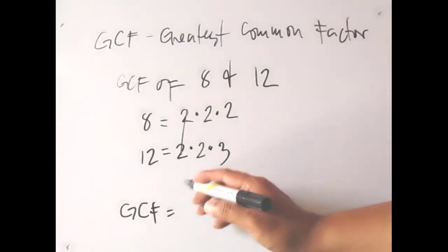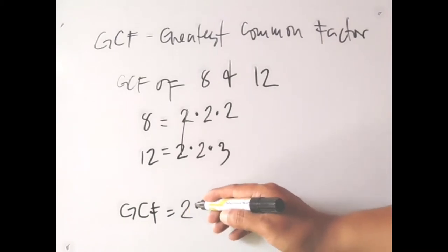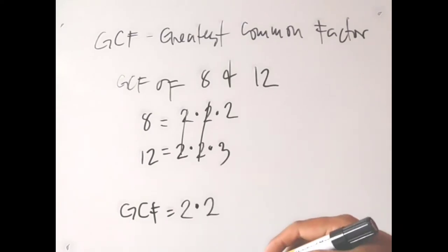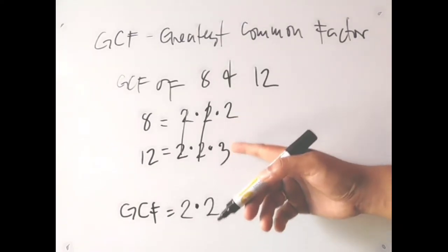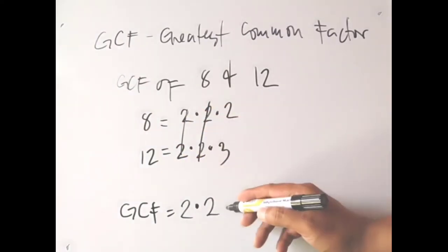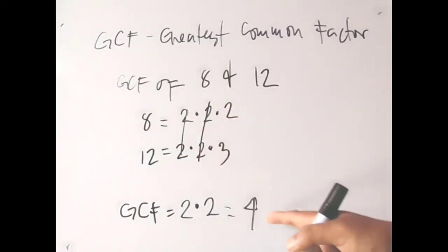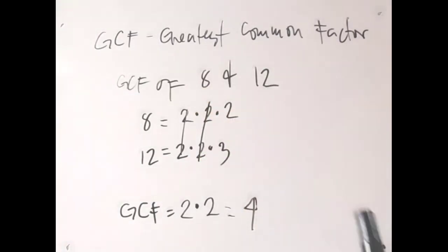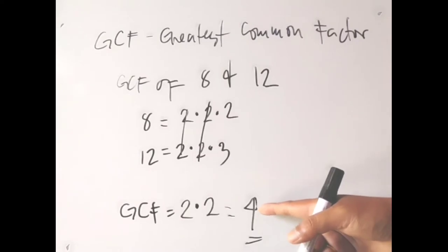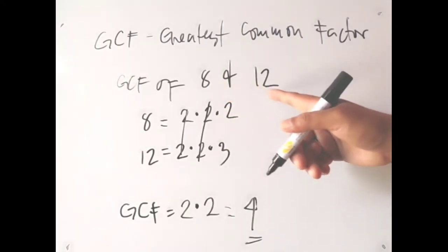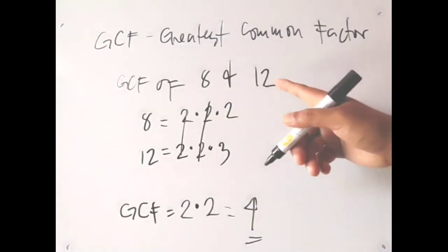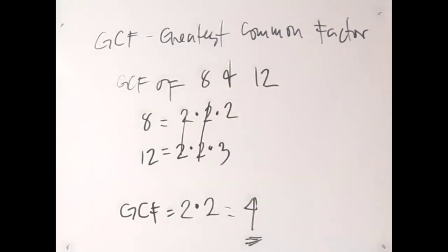Take the common factors: one 2, then another 2 — those are the matching factors. Since there are no more matching factors, the GCF of 8 and 12 is 2 times 2, which equals 4. So the GCF of 8 and 12 is 4 — it is the greatest number that can divide both 8 and 12.